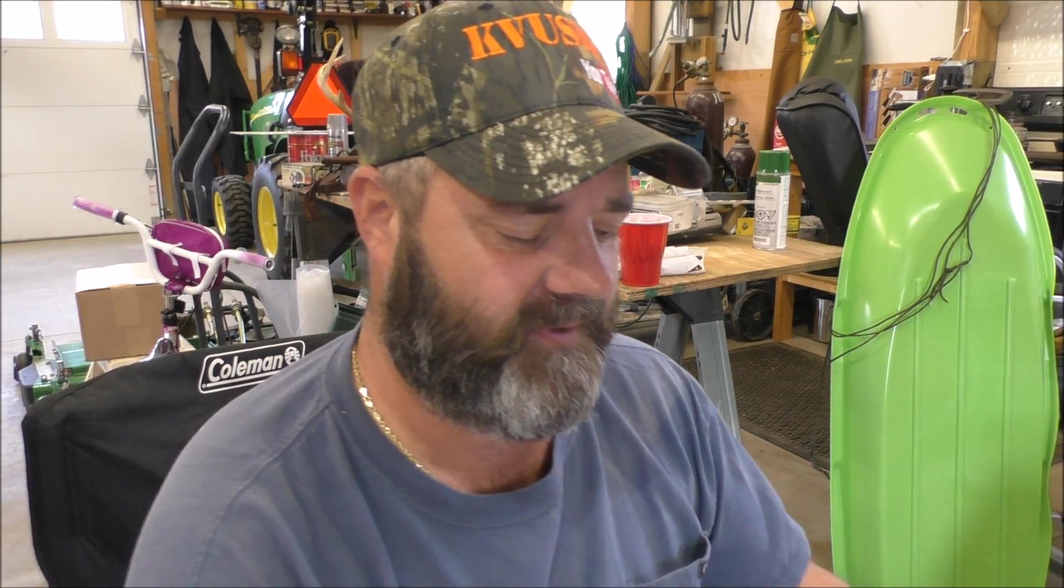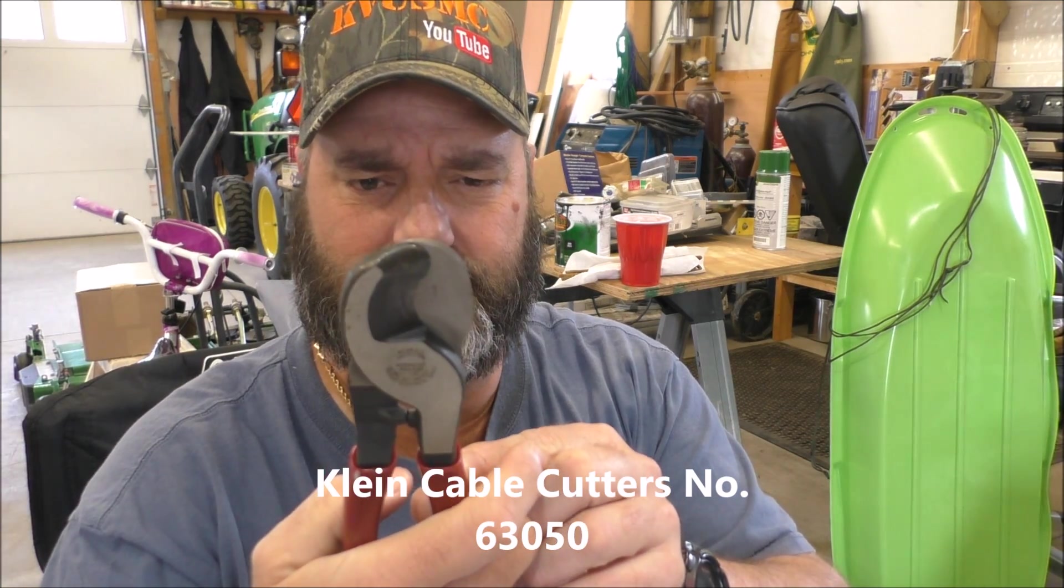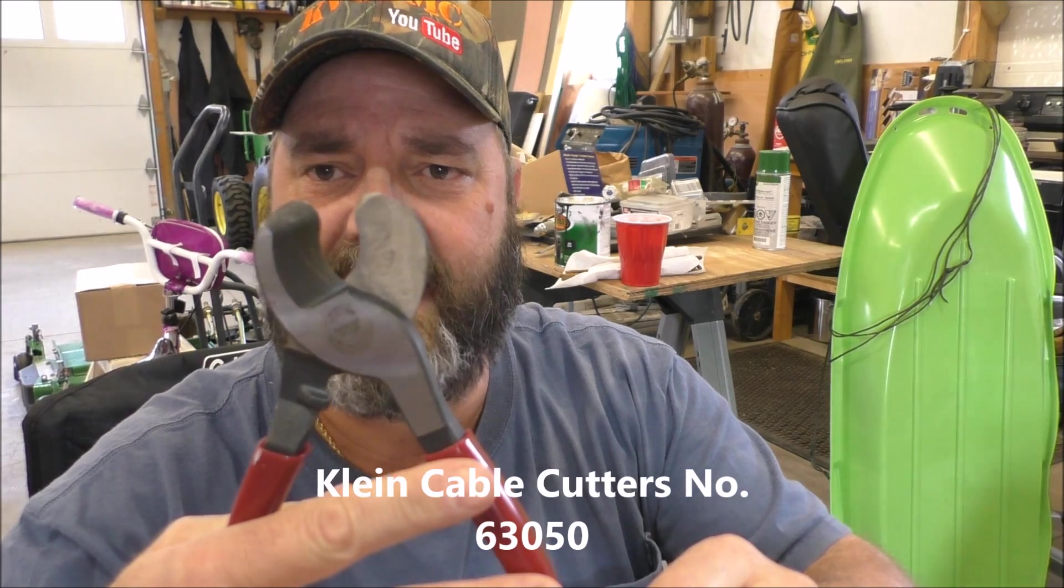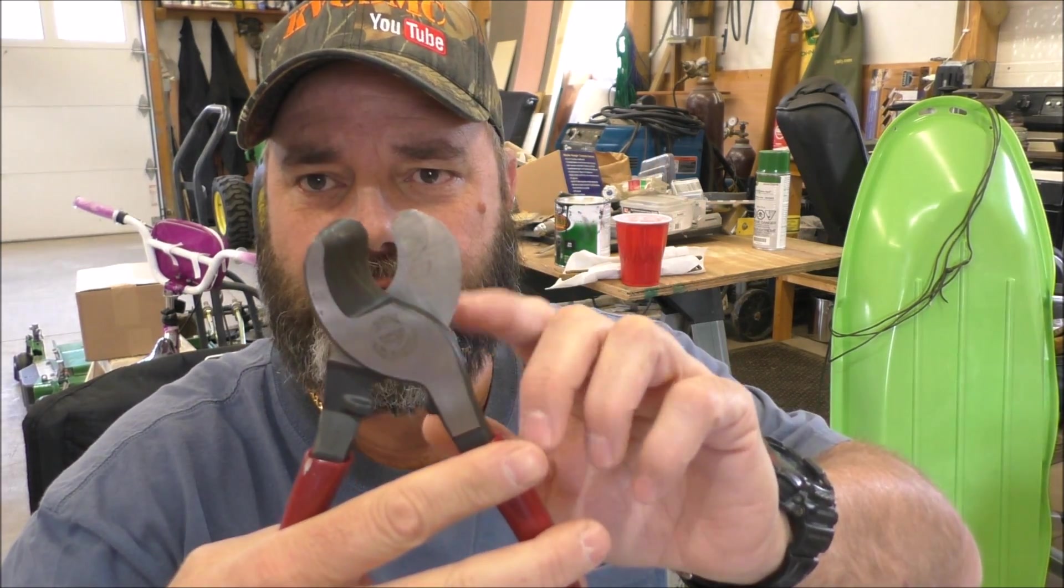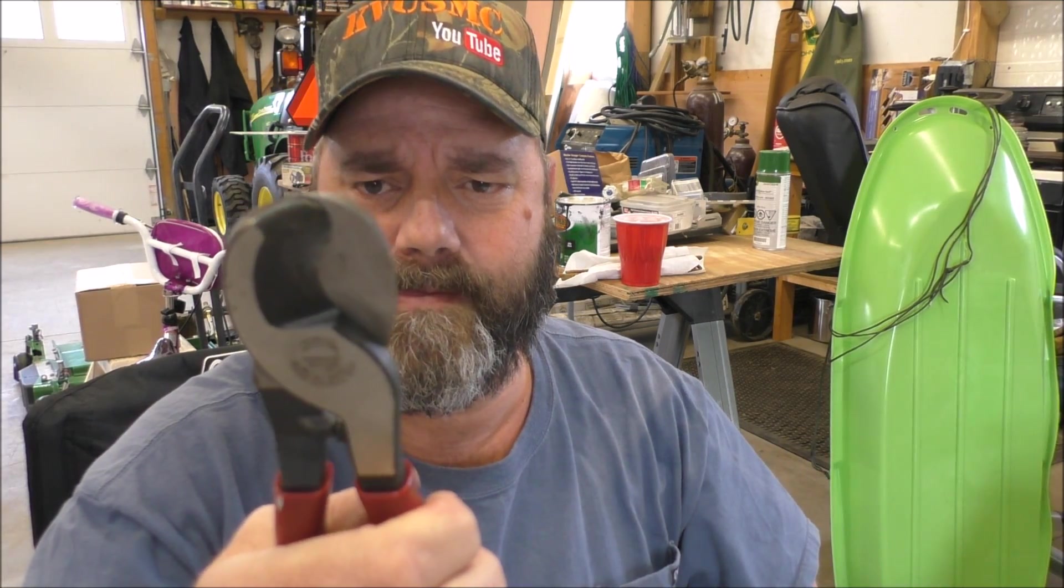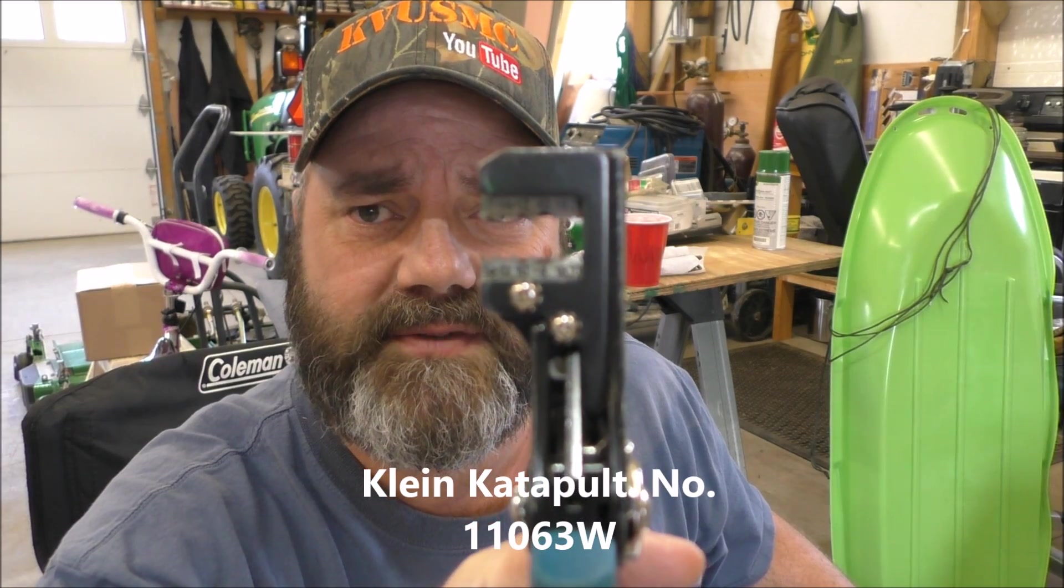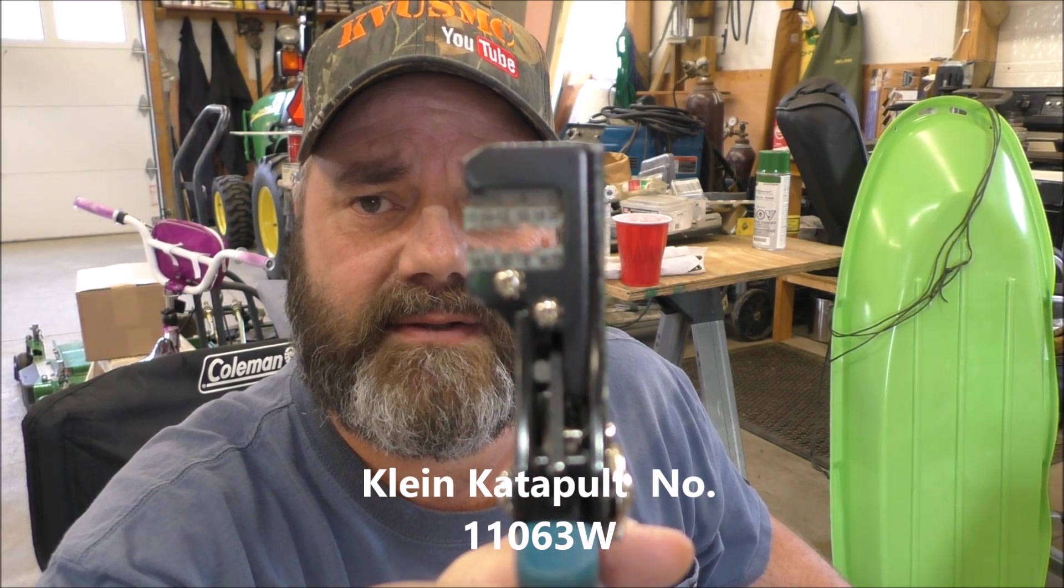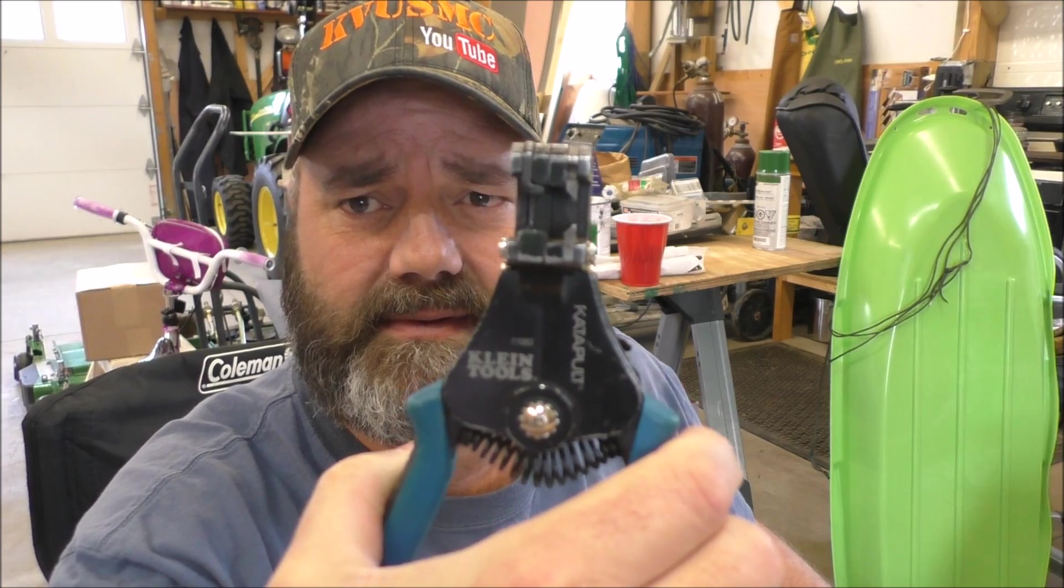The tools we're gonna be using: first of all to cut the cable, I got a pair of Kleins. These cut the cable nice and straight, it doesn't leave a burr on it. This will cut up to all cable. Also I'll be using my Klein strippers right here, and these will do up to like a 10 gauge, good for PV cable. I love the automatic strippers from Klein.